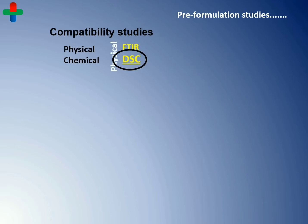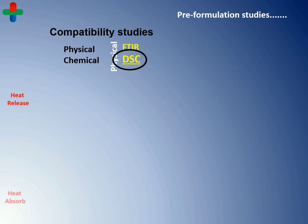Differential Scanning Calorimetry, or DSC, is another instrumental method used to study the interaction of drugs with other drugs or excipients. Like FTIR analysis, it is also a thermal analysis technique. In order to prepare polymeric products, one should have knowledge of the thermal behaviors of the drug and its compatibility with other excipients. This technique is based on the principle of how much thermal energy can be absorbed or released by any drug upon heating and cooling.